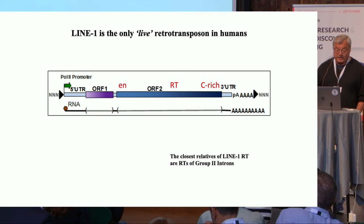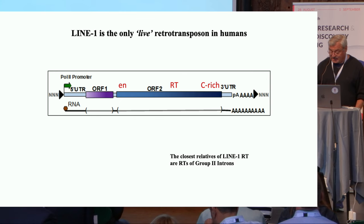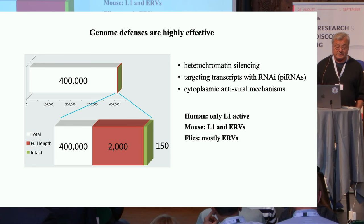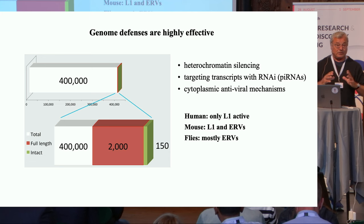These are very ancient and very prevalent retrotransposons. They're found in all organisms, including plants. In humans, they comprise about 17% of the genome. There's a lot of interest in them because, at least in the human genome, they are the only transposable elements capable of autonomous retrotransposition.